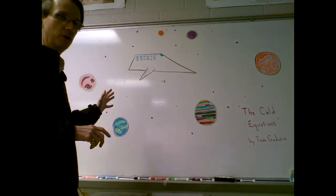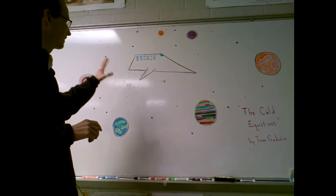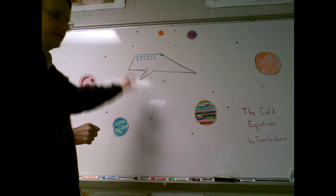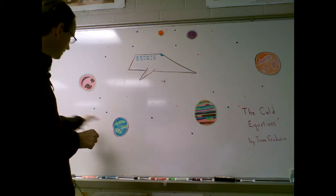All right, so I drew this. This is a terrible drawing because I am an awful artist. This is a spaceship. You can see a little spaceship, and you can see these planets and stars and stuff.